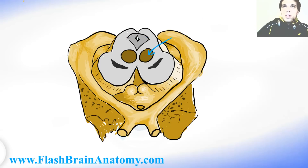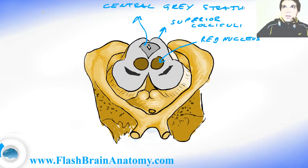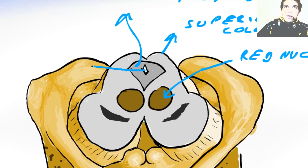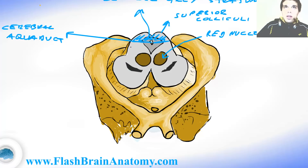Now in the tegmentum, we have the red nucleus, which is a structure involved with motor coordination. The tegmentum itself contains motor neurons called the reticular formation. This over here was the red nucleus, this over here were the superior colliculi, this over here was the central gray stratum. And this structure is the cerebral aqueduct — a tiny canal that connects the third and fourth ventricle. This aqueduct is what separates the tegmentum from the tectum. So we have the tegmentum over here and the tectum over here.